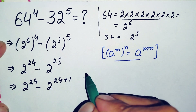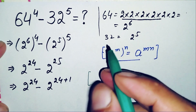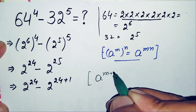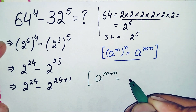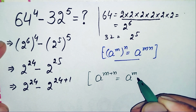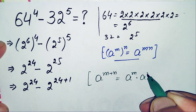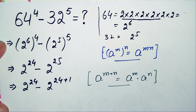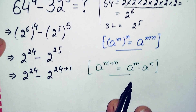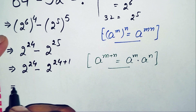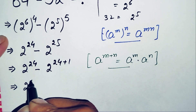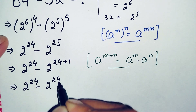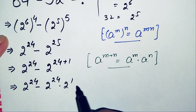Using the property a raised to power m plus n equals a raised to power m times a raised to power n, the second term becomes 2 raised to power 24 times 2 raised to power 1. So the full expression is now 2 raised to power 24 minus 2 raised to power 24 times 2 raised to power 1.